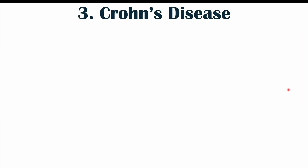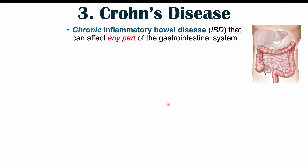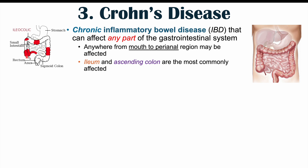The third condition that can cause perianal skin tags is Crohn's disease. Crohn's disease is a chronic inflammatory bowel disease (IBD) that can affect any part of the gastrointestinal system, from the mouth to the perianal region. The most commonly affected areas are the ileum — where the small intestine meets the large intestine — and the ascending colon.